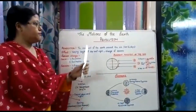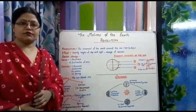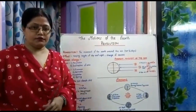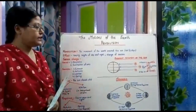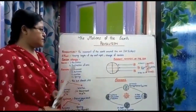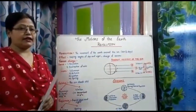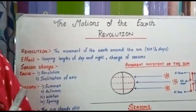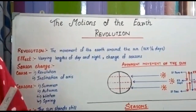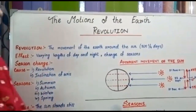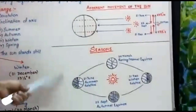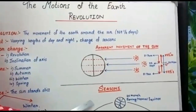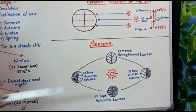Now what are the effects of revolution? Basically today we will talk about the effects of revolution. There are basically two types of effects: the varying length of day and night, and the second is seasonal change. Today we will talk about seasons — how revolution creates different types of seasons.